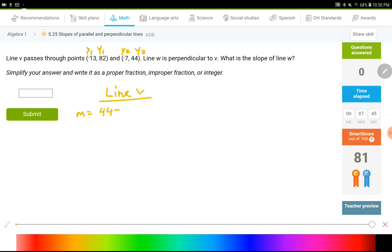44 minus 82, divided by negative 7 minus negative 13. If you subtract the numbers in the numerator, you will end up with negative 38, divided by... if you subtract the numbers in the denominator, you are going to end up with 6. Wait, let me recalculate. You end up with negative 38 divided by 6. These two numbers can be simplified. They are both divisible by 2. The one at the top is negative 19, the one in the bottom is 3. So that's the slope of the first line.